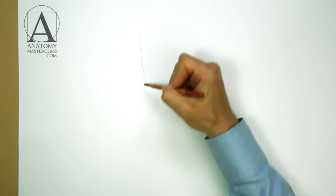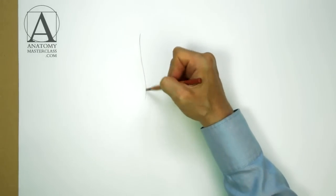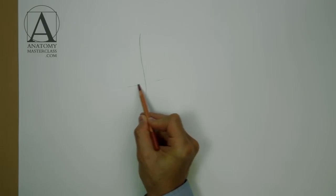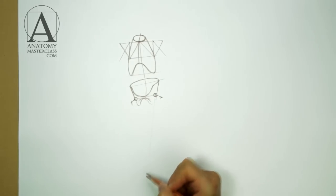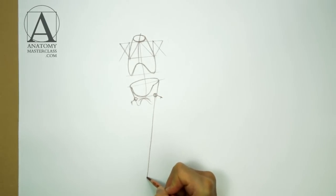The figure stands in the contrapposto position. The word contrapposto in Italian means counterpoise. The axis of the supporting leg is not vertical, but tilted. It points to the footprint which almost coincides with the projection of the body's center of gravity to the ground.